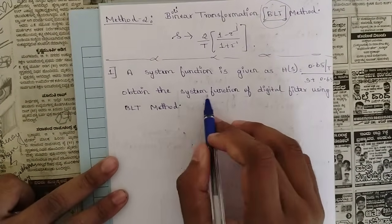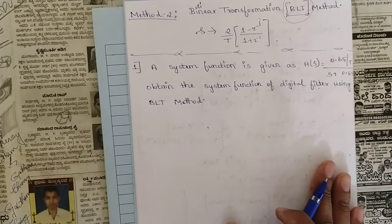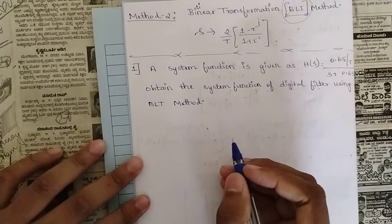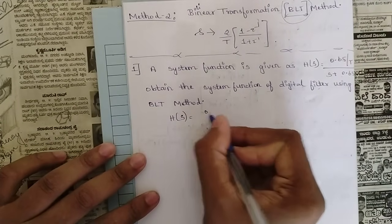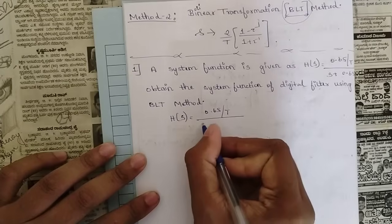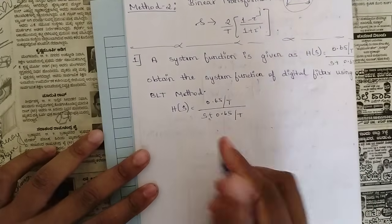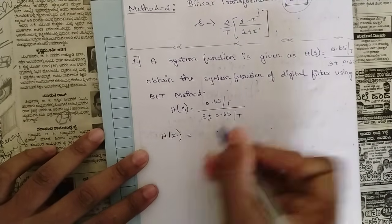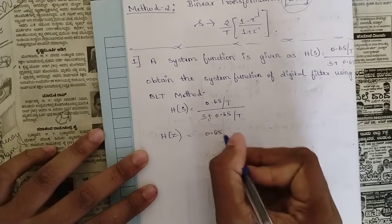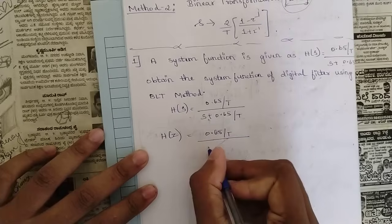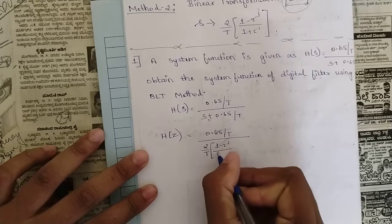We need to obtain the system function of the digital filter using the BLT method, that is the bilinear transformation method. H(s) = (0.65/T) / (s + 0.65/T). To convert this to H(z), wherever s appears we substitute (2/T) × (1 − z⁻¹)/(1 + z⁻¹).